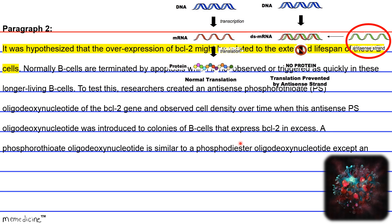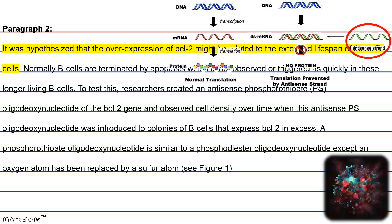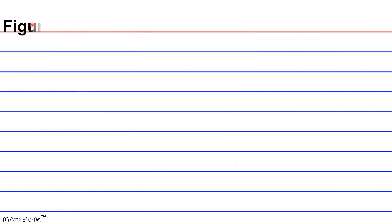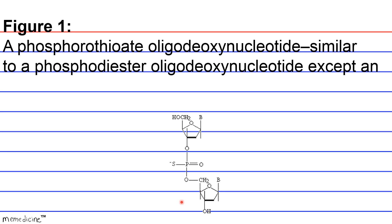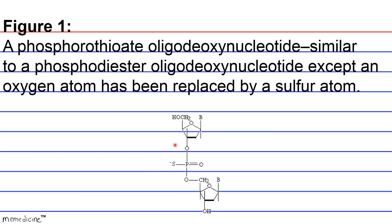A phosphorothioate oligodeoxynucleotide is similar to a phosphodiester oligodeoxynucleotide except an oxygen has been replaced by a sulfur atom. You can view this in Figure 1. In Figure 1, we see the phosphate anion of the phosphorothioate oligodeoxynucleotide.